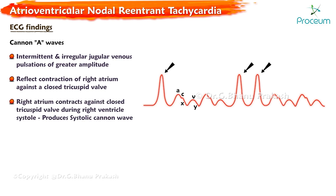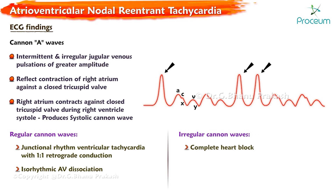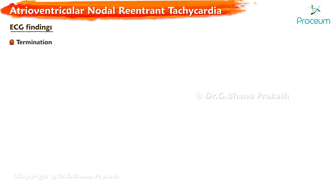Whenever the right atrium contracts against the closed tricuspid valve during right ventricular systole, it produces a systolic canon wave. Regular canon waves occur in junctional rhythm or ventricular tachycardia with one-to-one retrograde conduction, representing rhythmic atrioventricular dissociation. Irregular canon waves occur in complete heart block, classic atrioventricular dissociation, ventricular pacing, or ventricular ectopics.